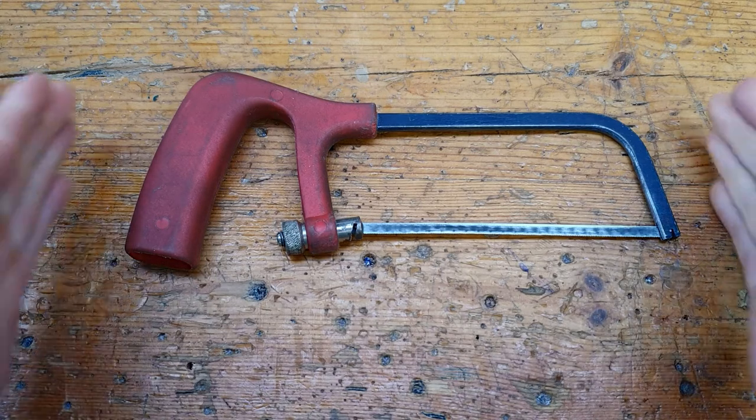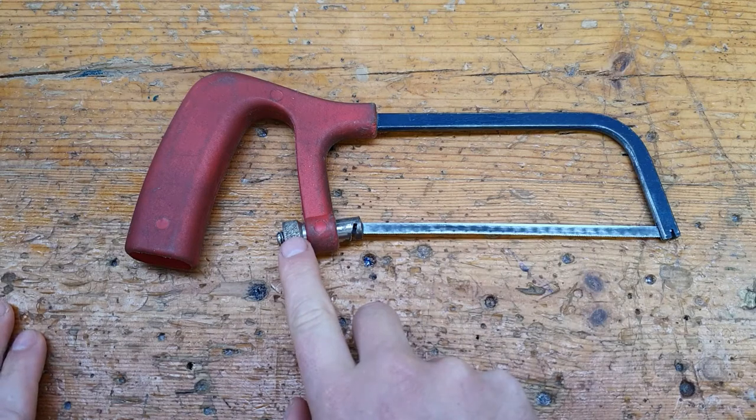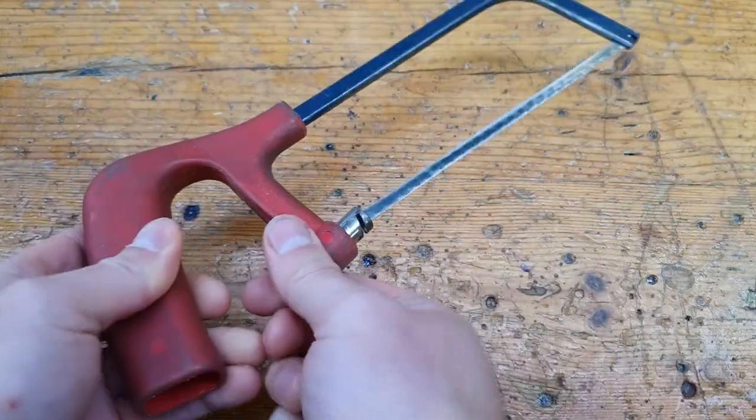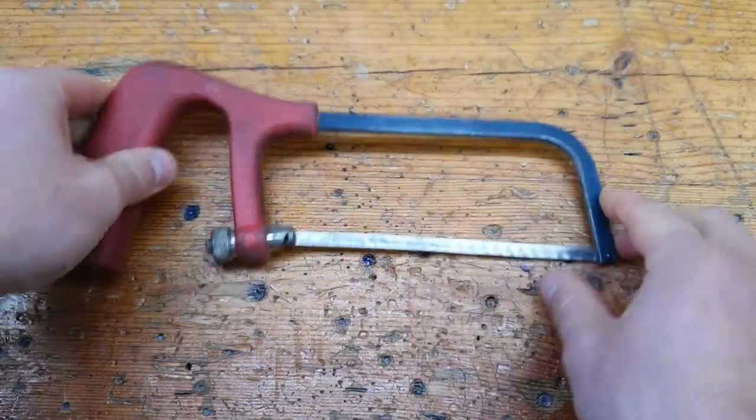This is the hacksaw itself, this is the handle, this is the blade. This little nut here is used to tighten the blade. When you're hacksawing, you want to make sure that is nice and tight and that your blade has a nice bit of tension on it.